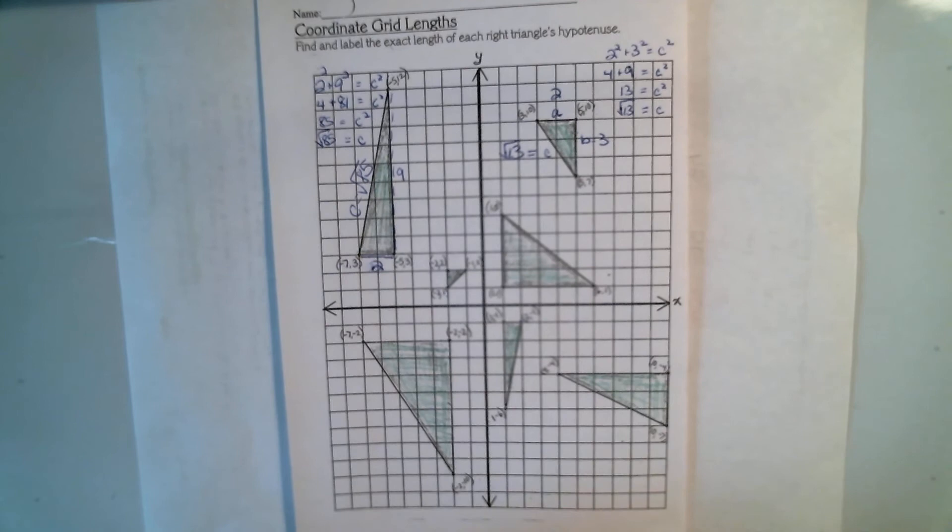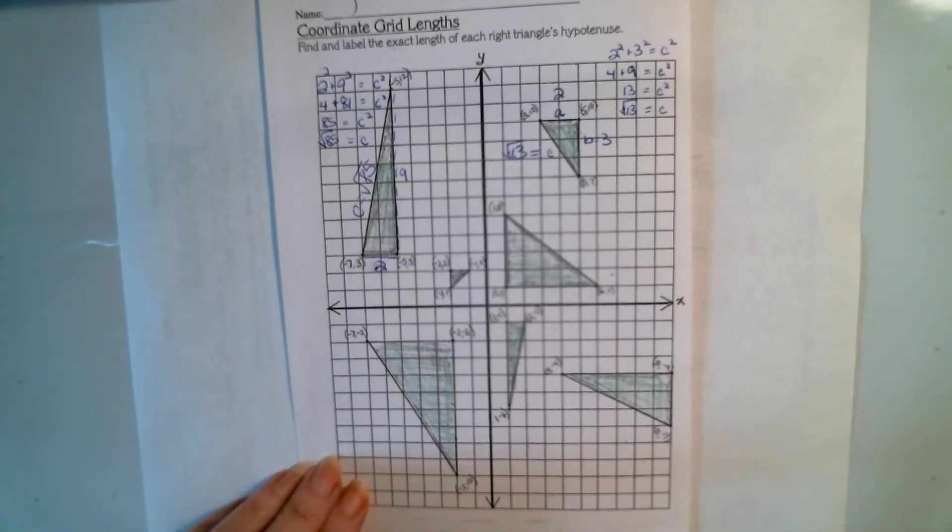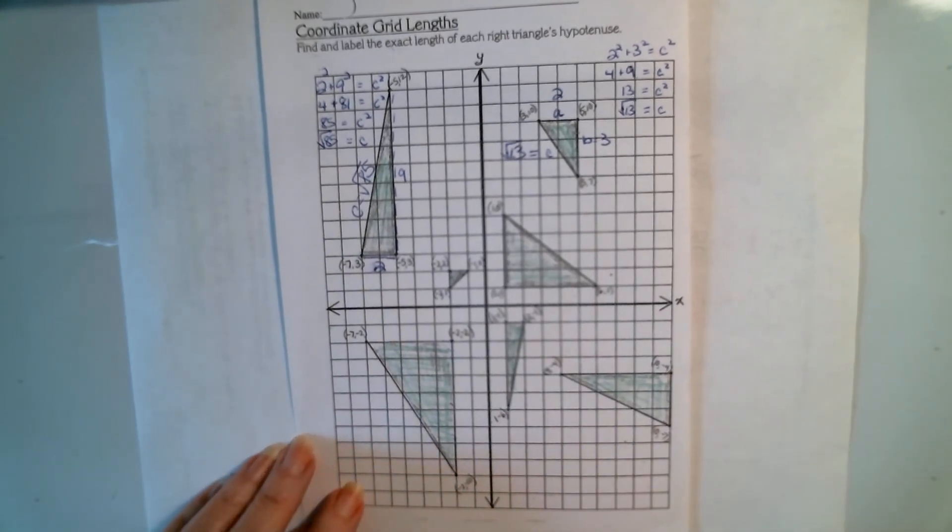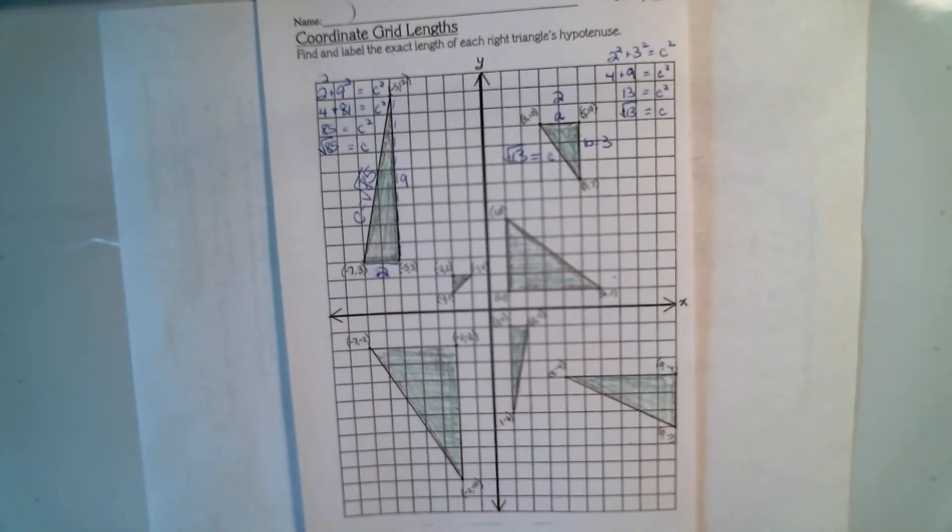Now, what I want you to do for me when you do the rest of these is to be thinking about your thinking. That's called metacognition. Think about your strategy. Pay real close attention to what you're doing because our goal is to try not to count those squares.